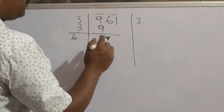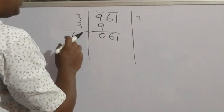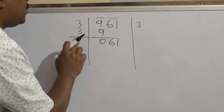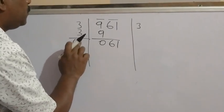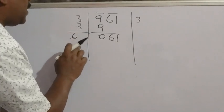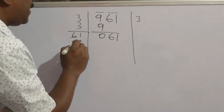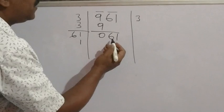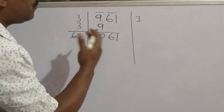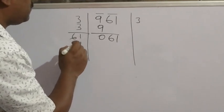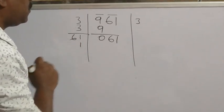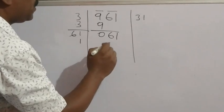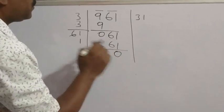Now bring down the next pair, which is 61. We got 0 remainder, so the number is 061. Here 6 is in the tens place, unit digit is blank. We have to write a number in the unit place such that when multiplied it gives us 61 or nearly less than 61, not more than 61. Try 1: 61 × 1 = 61. So we write 1 in the quotient. Multiplying gives 61. Subtract: 61 − 61 = 0.